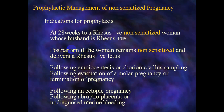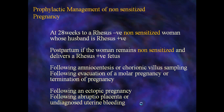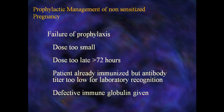Other indications for anti-D prophylaxis in non-sensitized RH-negative women with RH-positive husbands include: postpartum if delivering an RH-positive fetus while remaining non-sensitized; following amniocentesis or chorionic villus sampling; following evacuation of molar pregnancy or termination of pregnancy; following ectopic pregnancy; following abruptio placentae or undiagnosed uterine or vaginal bleeding. Causes of prophylaxis failure include: dose too small, dose given too late (more than 72 hours), patient already immunized, antibody titer too low for laboratory recognition, or defective immunoglobulin given.